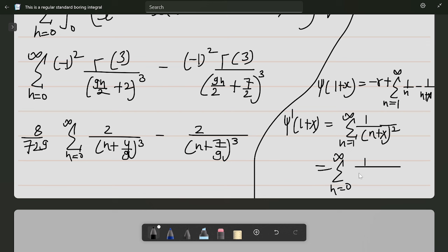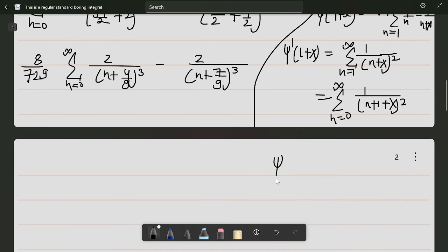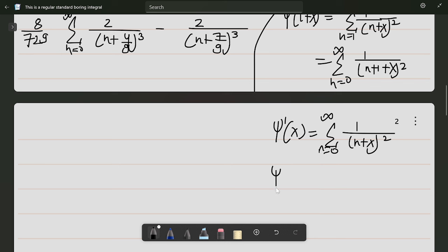I can replace x+1 by x, giving ψ'(x) equals sum from n equals 0 to infinity of 1/(n+x)². Again differentiate with respect to x: ψ''(x) equals sum from n equals 0 to infinity of -2/(n+x)³. This sum is actually equal to the trigamma function.